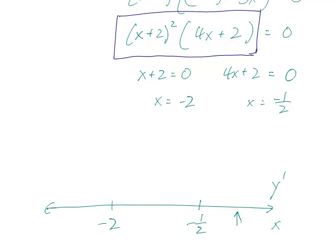If I plug 1 in, I'm going to get 1 plus 2, 3 squared, and 4 plus 2, 6. So positive squared times positive, that's completely positive.